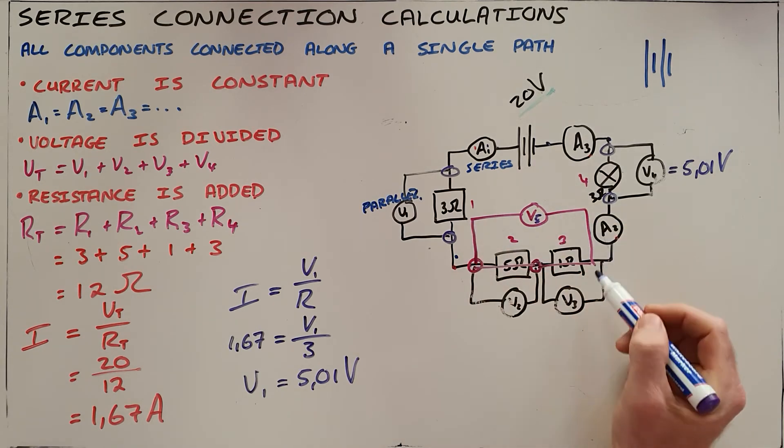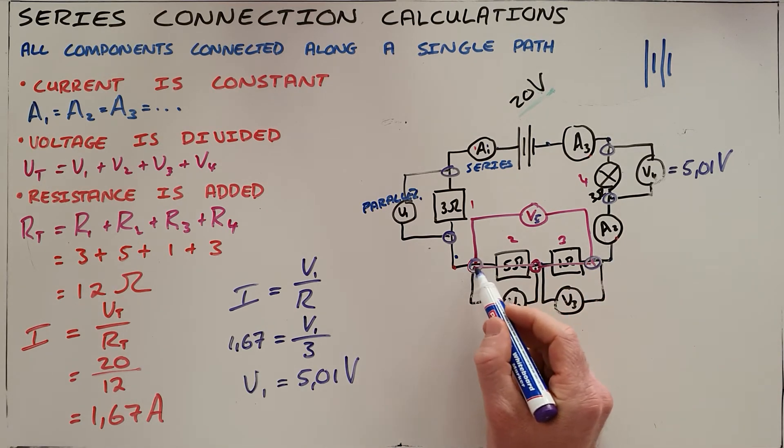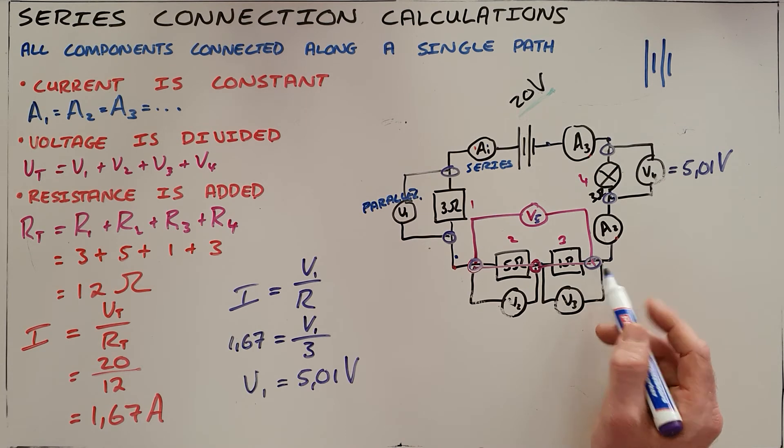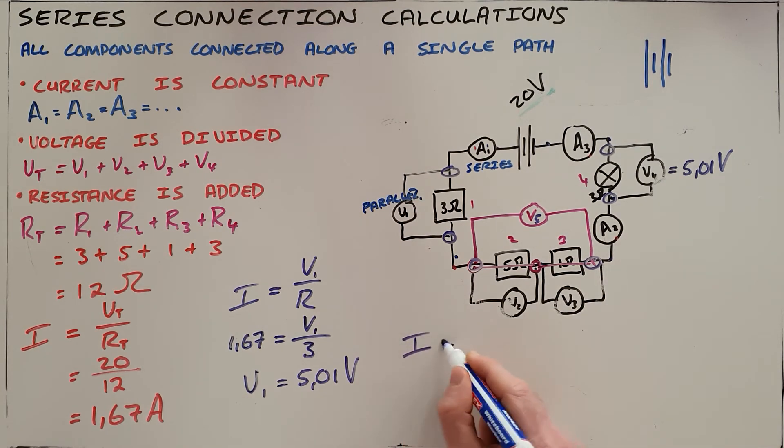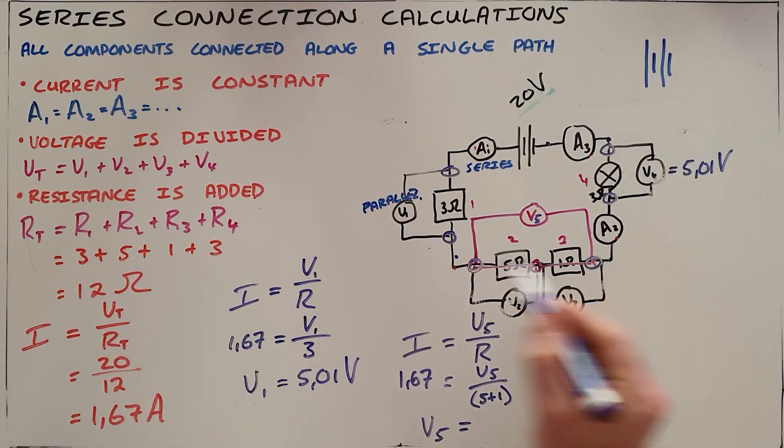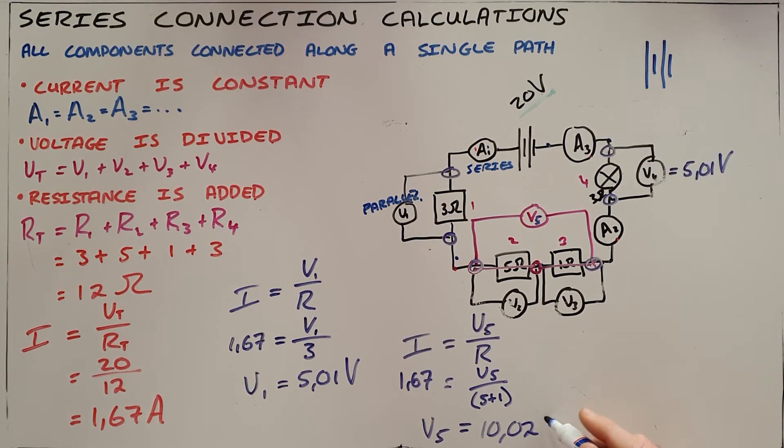What we can then see if we call this voltmeter V5 here is it is possible to calculate the voltage over multiple resistors because we know that the current through those resistors remains constant. We know that the resistance there is added, so we can once again use Ohm's law to say that the voltage over those two resistors is equal to the sum of those two resistors and the current, which remains constant, as 1.67. Our voltage is the unknown, and the resistance is the sum of 5 and 1. And we can then safely say that the voltage across those two resistors is then 10.02 volts.